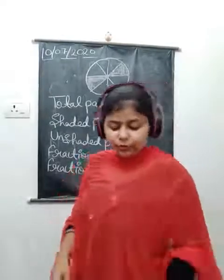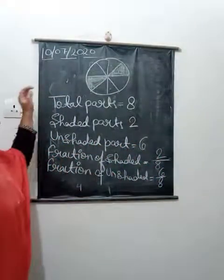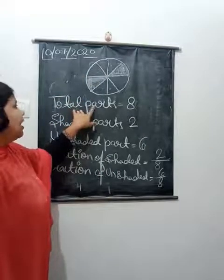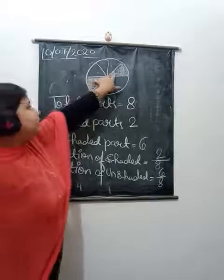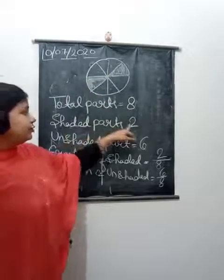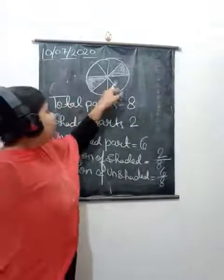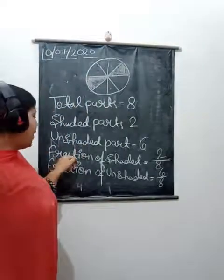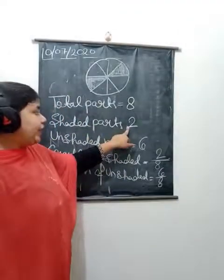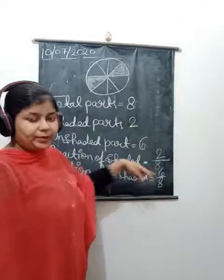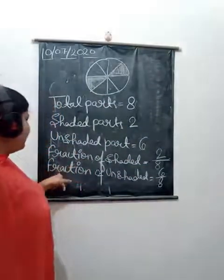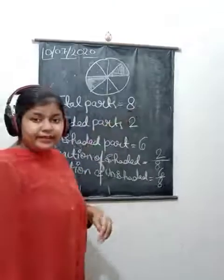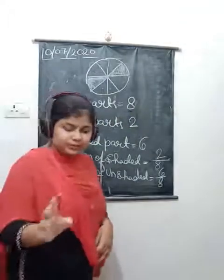Let me repeat: here we have a figure with total eight parts. Among these eight parts, two parts are shaded, so shaded part equals two. Unshaded parts: one, two, three, four, five, six - six parts are plain. Fraction of shaded equals two upon eight. Fraction of unshaded part equals six upon eight.